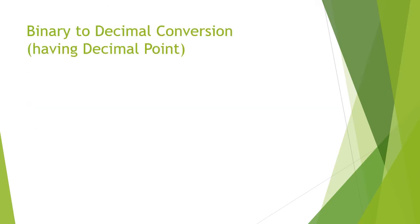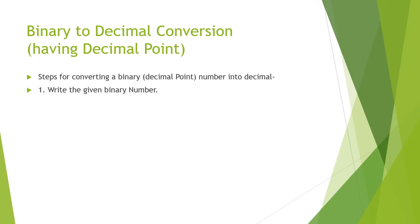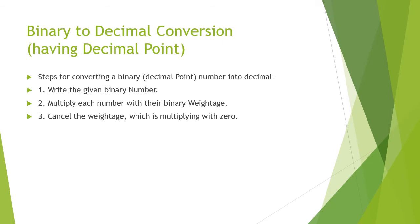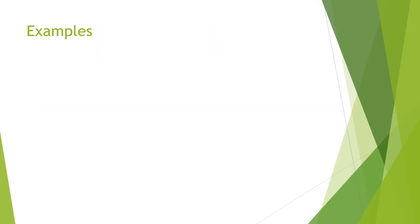Now let us discuss binary to decimal conversion where the binary number has a decimal point. The steps are the same: write the number, multiply each digit by its binary weightage, cancel weightages multiplied by 0, and add the remaining values. The example I have taken is 10101.101 in base 2, which has radix 2 confirming it is binary, and we need to convert it to decimal.